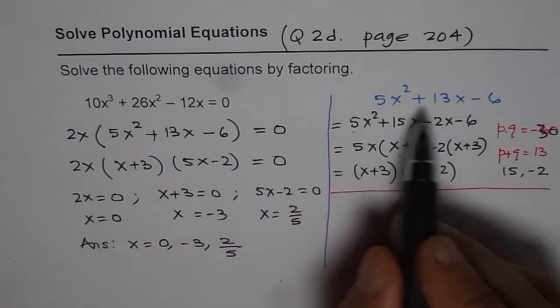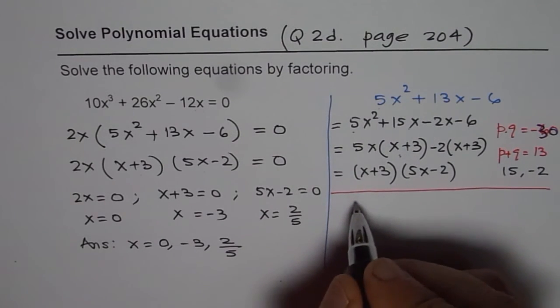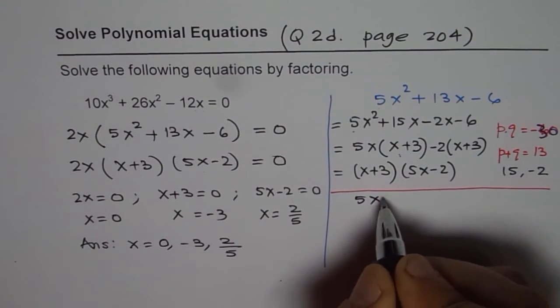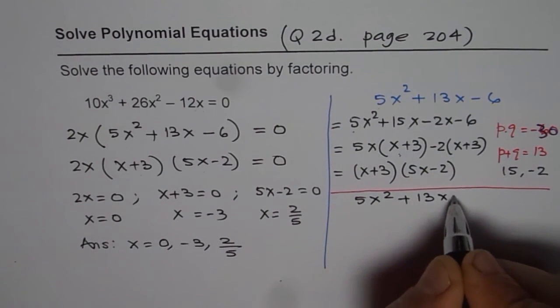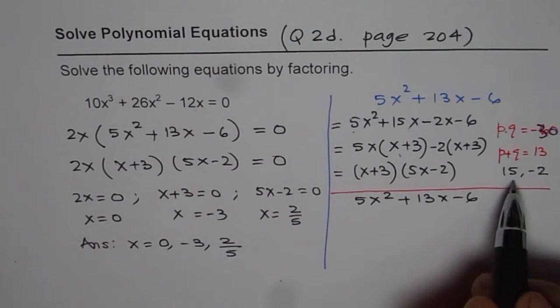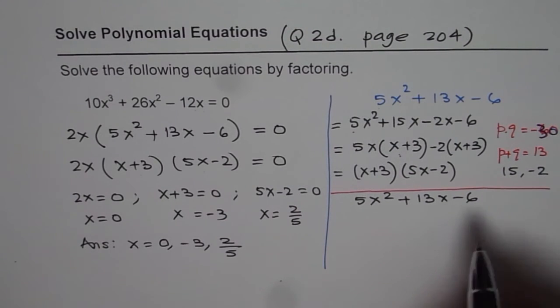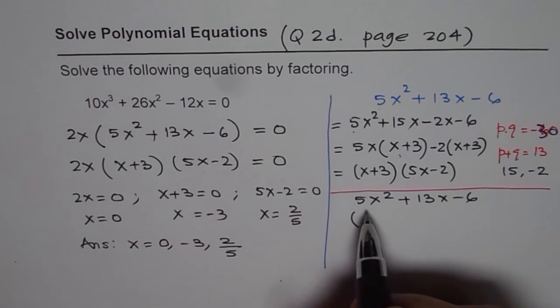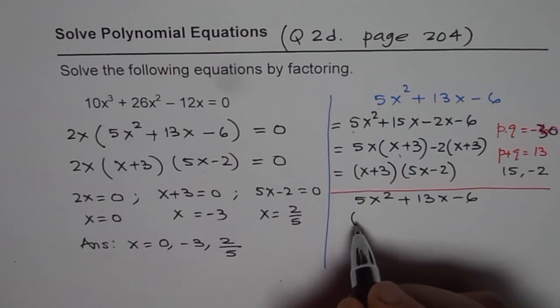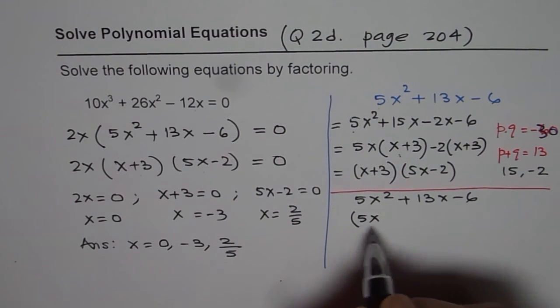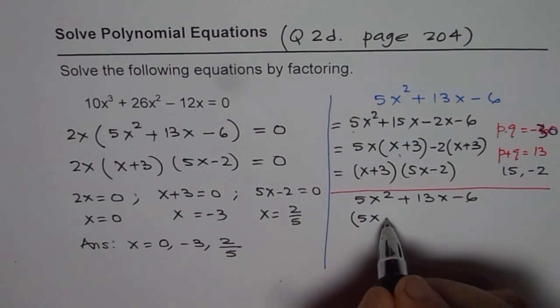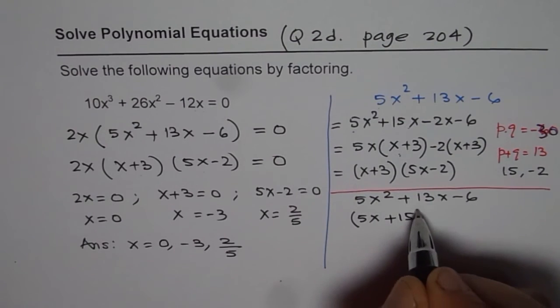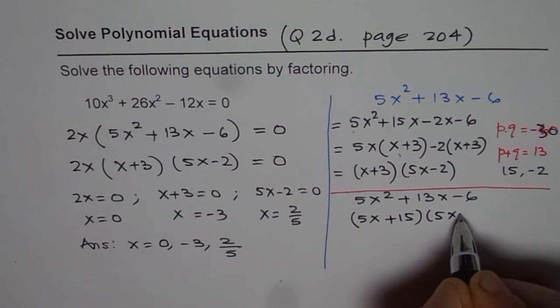We can apply similar technique here. So, let me show you once. Rework on this technique of factoring. 13x minus 6. So, the magic numbers were 15 and minus 2. So, what we will do is, but this time leading coefficient is 5, not 1. So, we will maintain 5x instead of x and write down our magic numbers, which are 15 and minus 2. So, plus 15 times 5x minus 2.